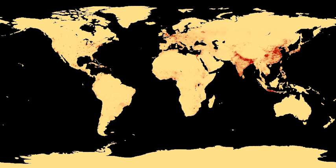In biology, a population is all the organisms of the same group or species, which live in a particular geographical area, and have the capability of interbreeding.